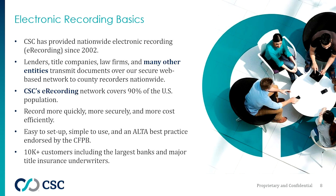As it stands right now, CSC's network covers a little more than 90 percent of the U.S. population. We're in approximately 2,500 counties in the country — roughly there are 3,600 counties nationwide. So while there are about 1,100 counties not yet e-recording, the 2,500 that do encompass a little over 90 percent of the U.S. population. E-recording provides you with the ability to record much more quickly, securely, and efficiently, and in most cases there are cost benefits as well.